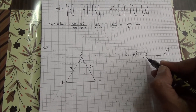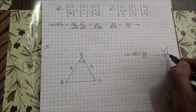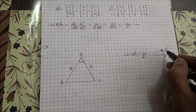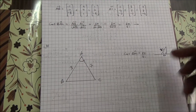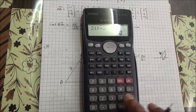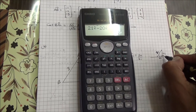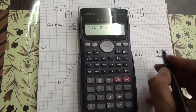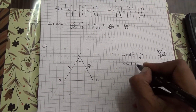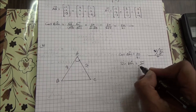So if cosine is 20 over 21, meaning the adjacent is 20 and the hypotenuse is 21, we can use Pythagoras to find sine. So 21 squared minus 20 squared gives us 41, and the square root of that gives us root of 41. Therefore sine of BAC is root of 41 over 21.